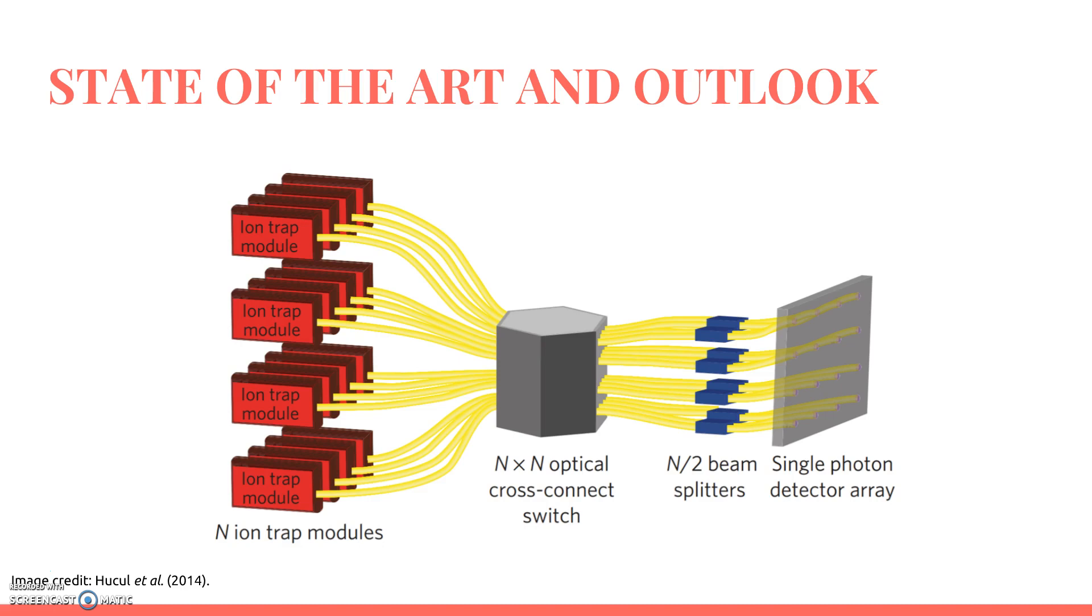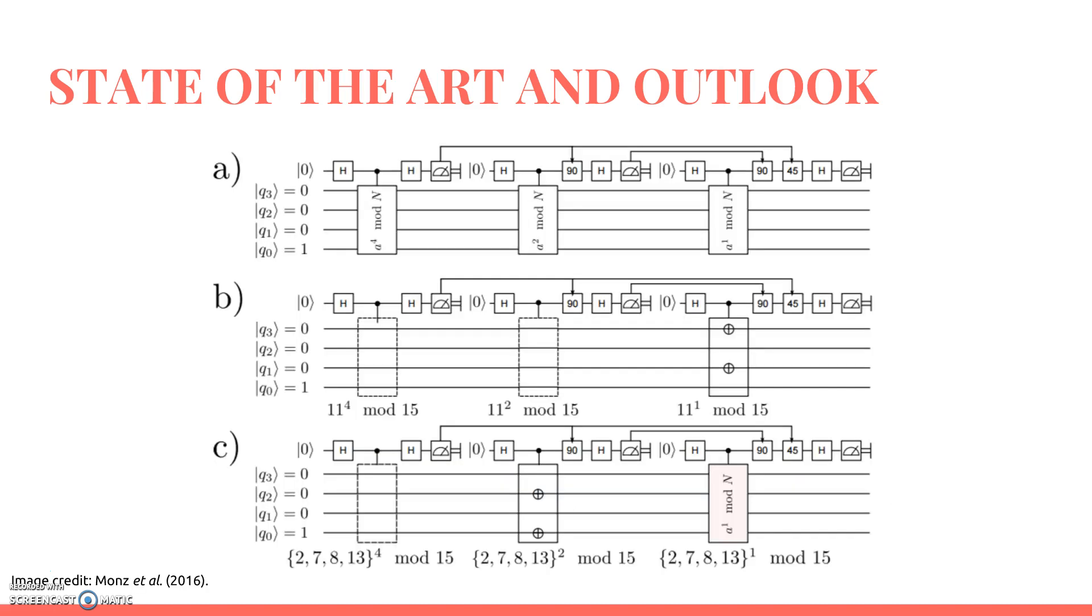Additionally, on March 4th, 2016, Monz et al. at the University of Innsbruck in Austria published a paper in Science which reported the realization of a scalable Shor algorithm using quantum computing. The researchers were able to factor the number 15 into 3 times 5 with greater than 99% accuracy using Shor's algorithm by coherently manipulating 11 trapped ion qubits. This discovery marks the potential beginnings of a large-scale trapped ion quantum computing.